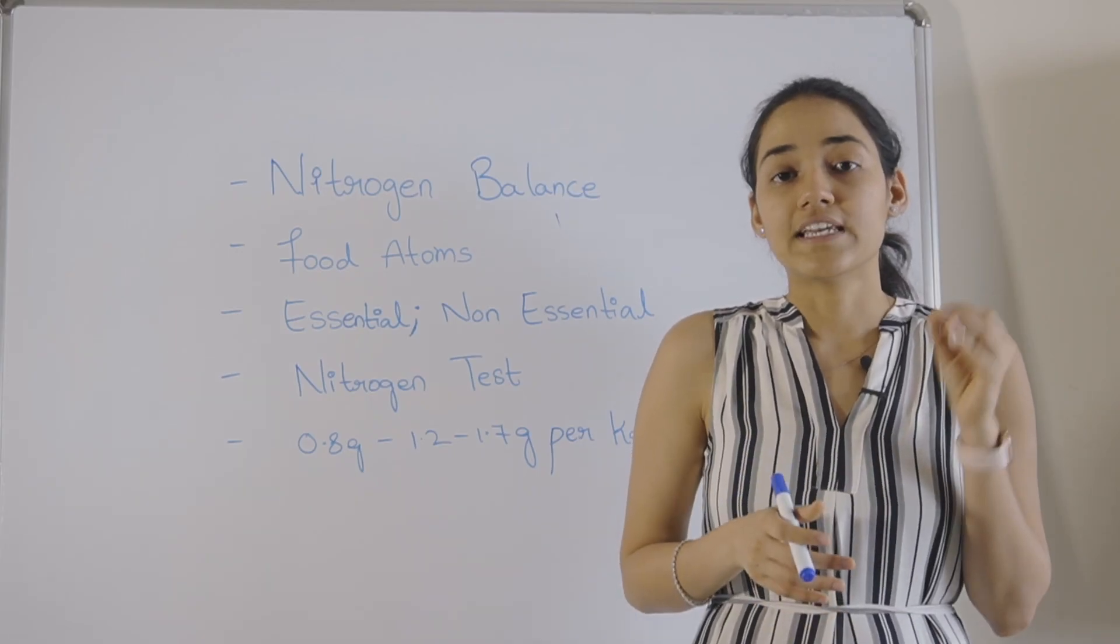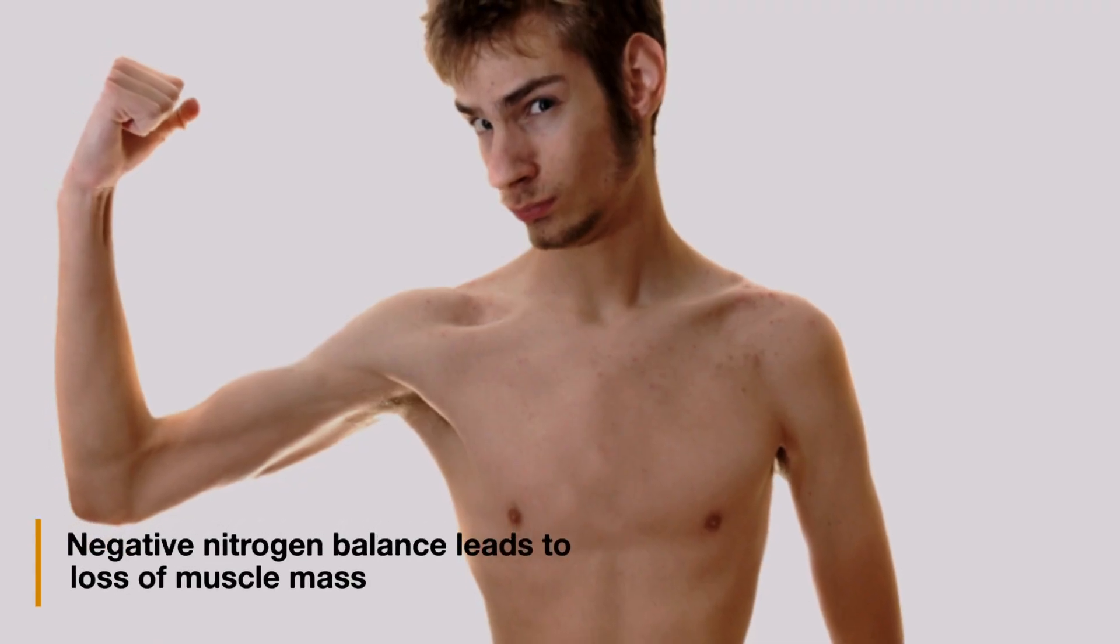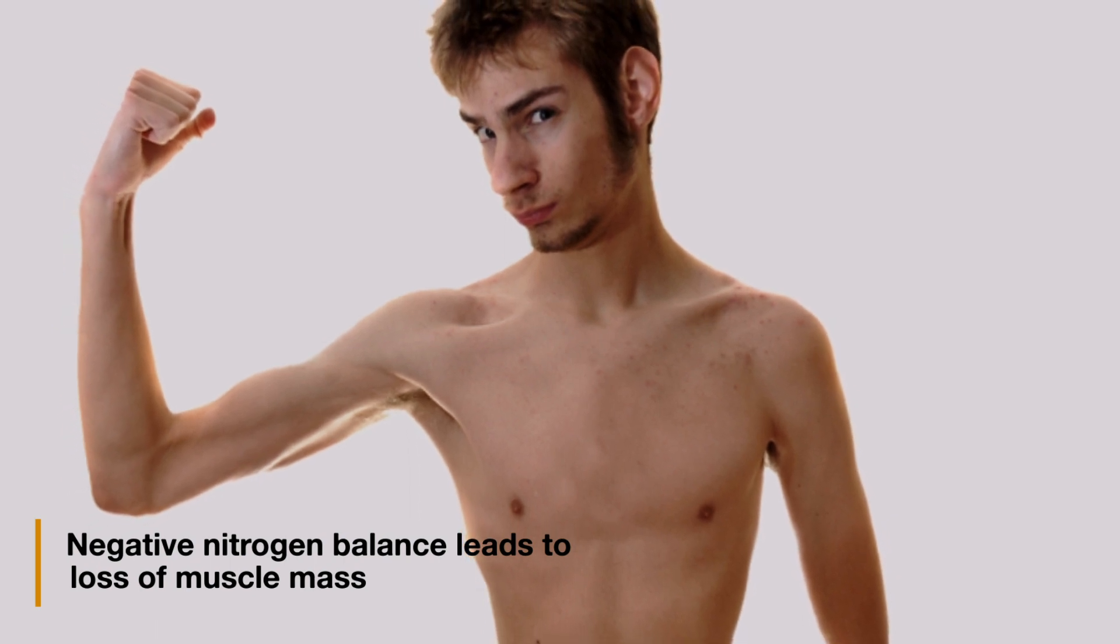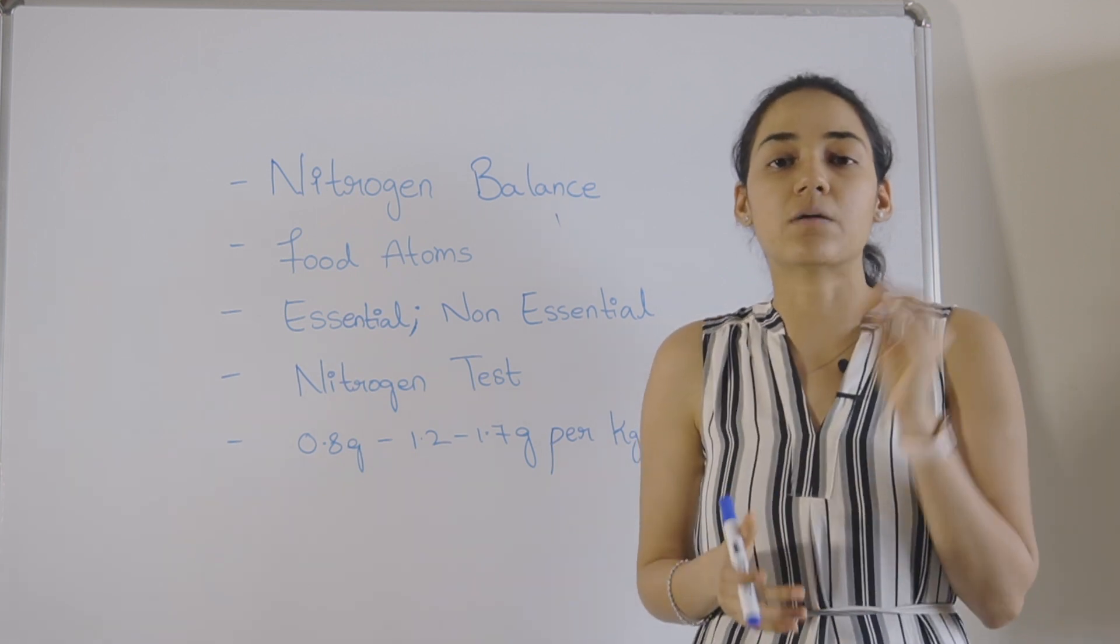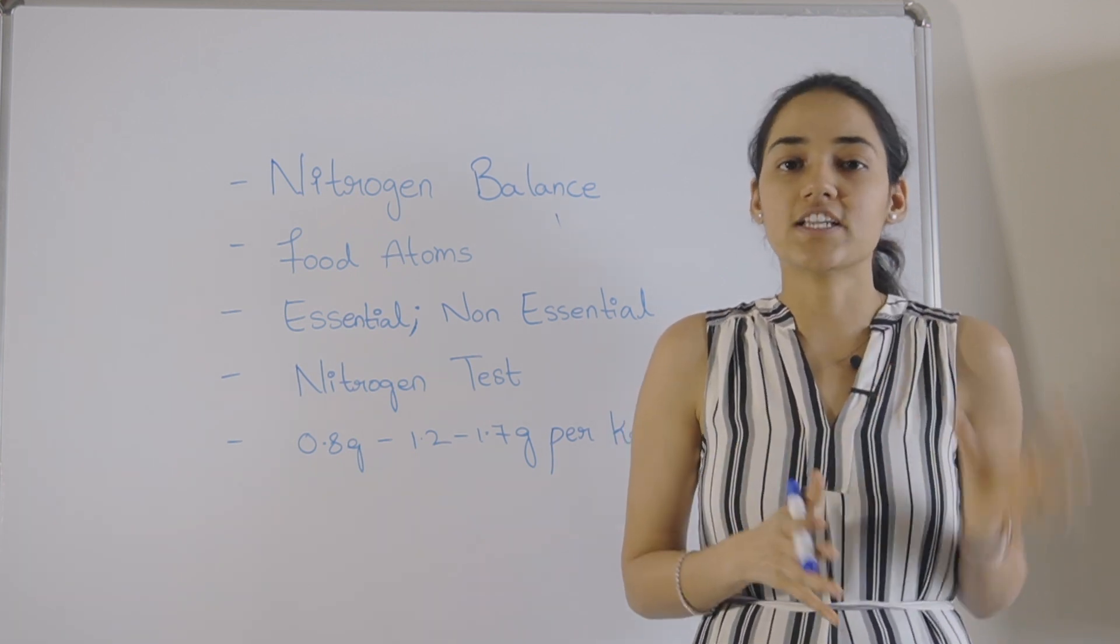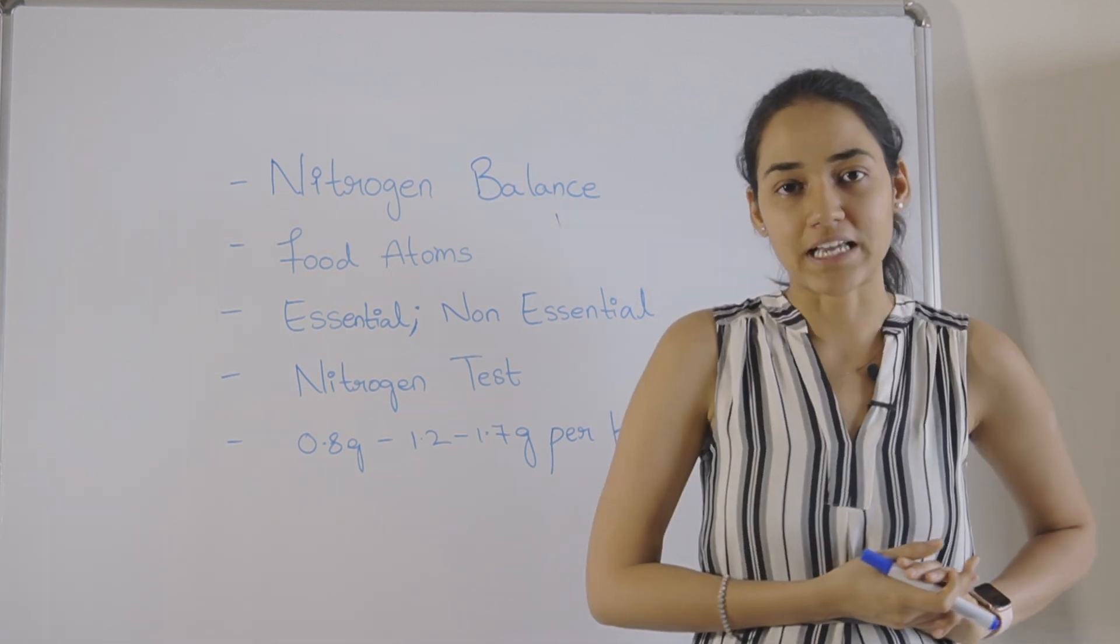Now when it comes to negative nitrogen balance, you tend to break down your muscles. You're basically in a catabolic state. You're not in the process of building your muscle, but you're in the process of breaking it down. So you have to make sure that you get a complete amino profile of both non-essential and essential amino acids to make sure that you're in a positive nitrogen balance.